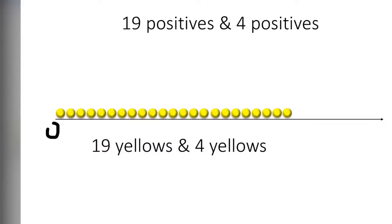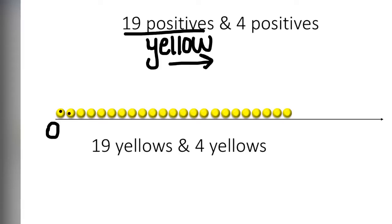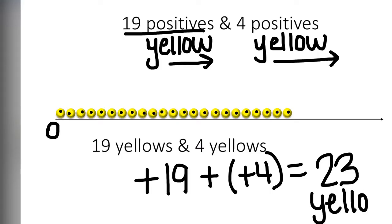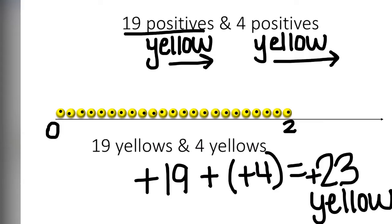Here we have counters on a number line. We start with 19 positive. So we go ahead and place 19 yellow counters on the number line. Then we need 4 more positive. So we are going to place 4 more yellow counters on the number line. Again, the signs here are the same. 19 and 4 both are positive. So we add them together and we get a total of 23 yellow. Which means plus 23.